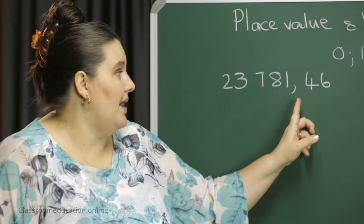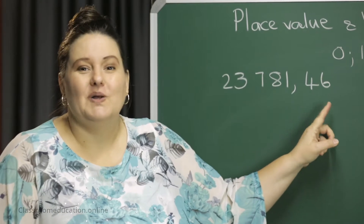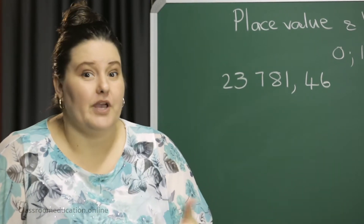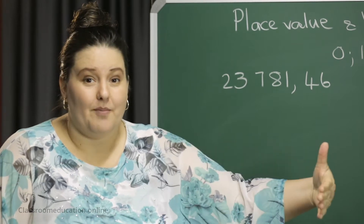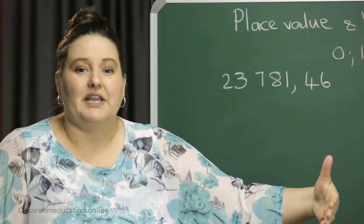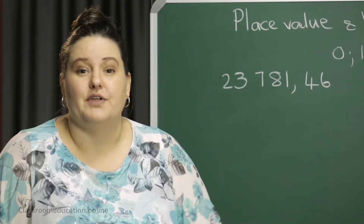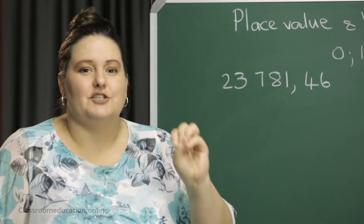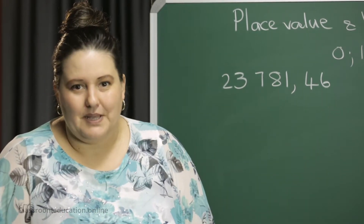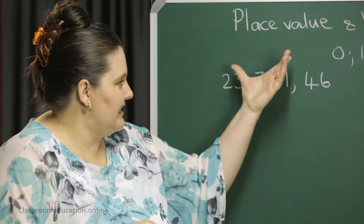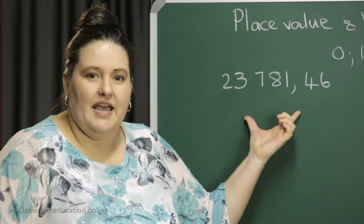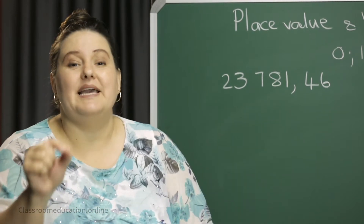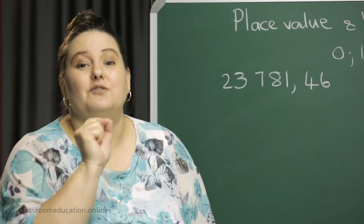23,781,46. Remember, in South Africa we are using a comma to indicate a decimal. But if you are in America, I know that you are using a full stop to indicate a decimal. Now let's take this value and insert this number in a place value diagram.